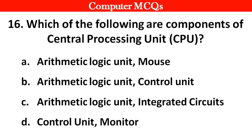Next question. Which of the following are components of the central processing unit? Options A: ALU and MOS, B: Arithmetic Logic Unit and Control unit, C: ALU and Integrated circuits, D: Control unit and Monitor. Right answer is option B: Arithmetic Logic Unit and Control unit.